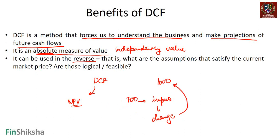Will it be selling more? Will costs be lower? Will growth be higher? Will risk go down? What does the stock market assume that results in this price, different from what we estimated? Are those assumptions logical or feasible? So DCF: (1) forces us to understand the business, (2) is an absolute measure allowing independent valuation.